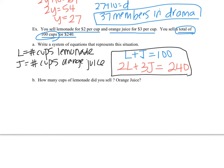So I'm just going to rewrite my equations down underneath. L plus J equals 100. And 2L plus 3J is equal to 240. You could multiply the top equation by negative 2, or you can multiply the top equation by negative 3, depending on which variable you want to cancel. I usually like to pick the smaller number, so I'm going to multiply by negative 2.